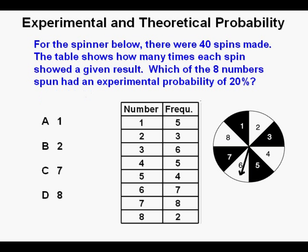Problem 1. For the spinner below, there were 40 spins made. The table shows how many times each spin showed a given result. Which of the eight numbers spun had an experimental probability of 20%?